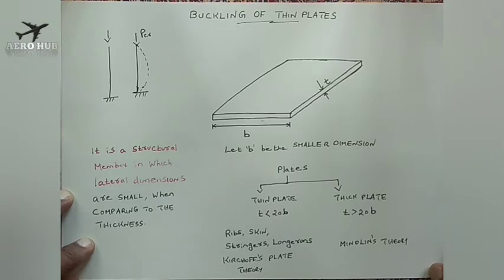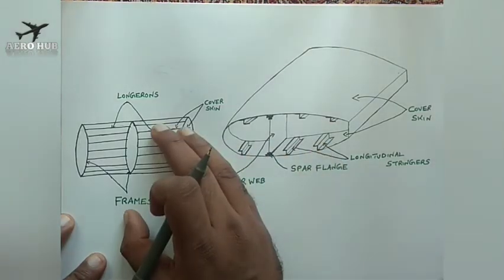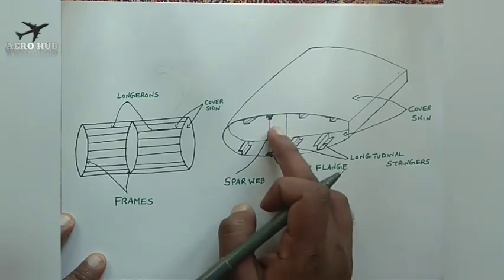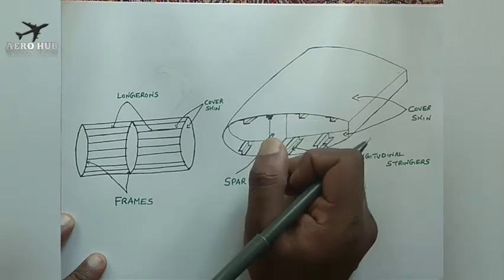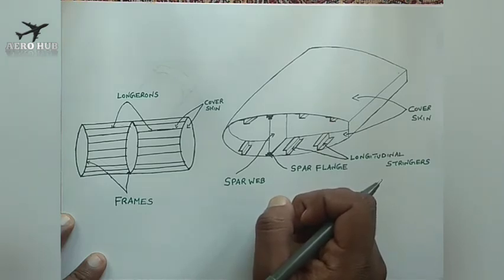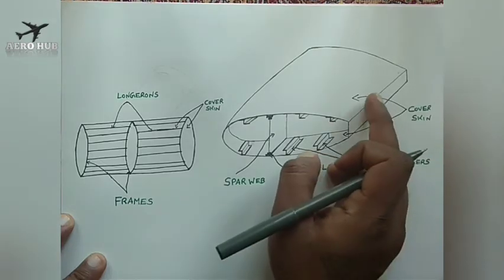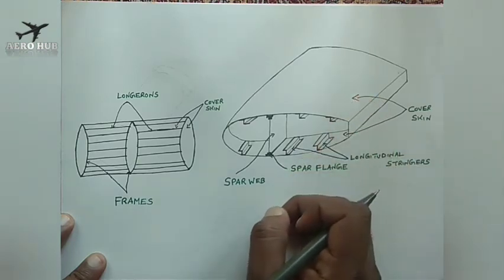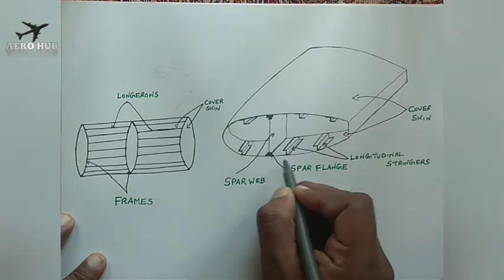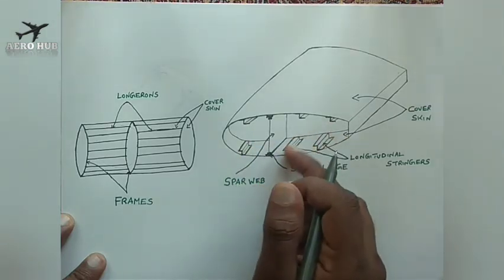Now we will see the airframe application of plates. As you can see in the figure, we have a section of wing here and a section of fuselage here. In the wing section, we have a spar web which is a typical example of thin plate, and the cover skin is like a curved sheet — a plate can also be defined as a sheet of material. This cover skin is also like a thin plate, and you can also see the spar flanges.